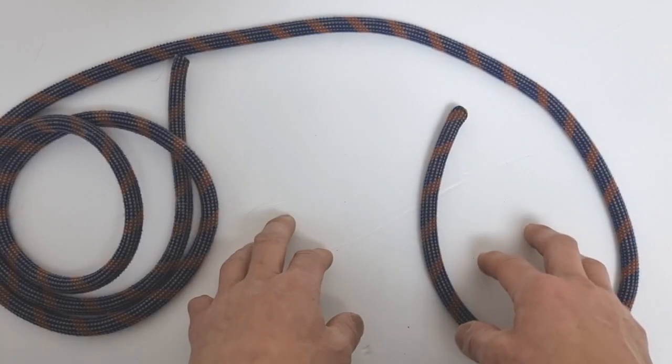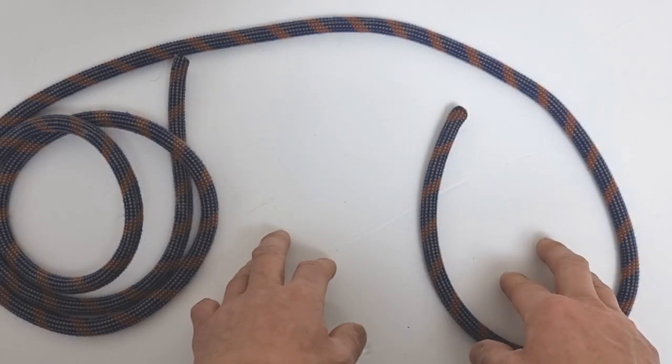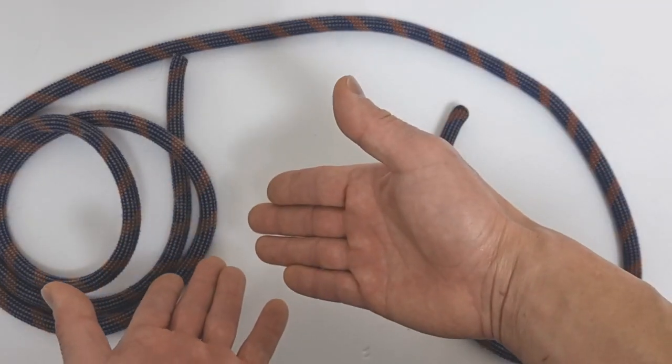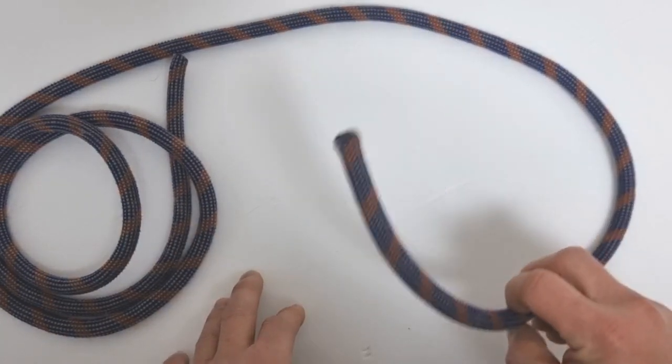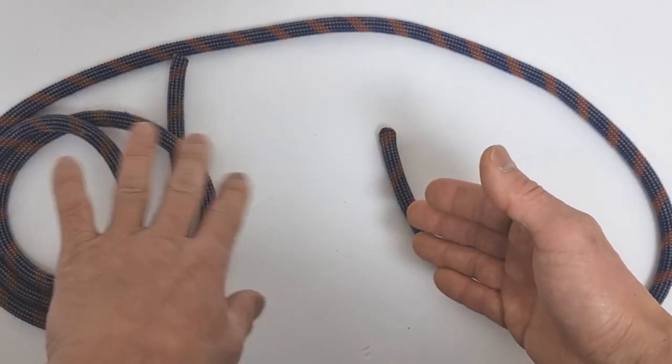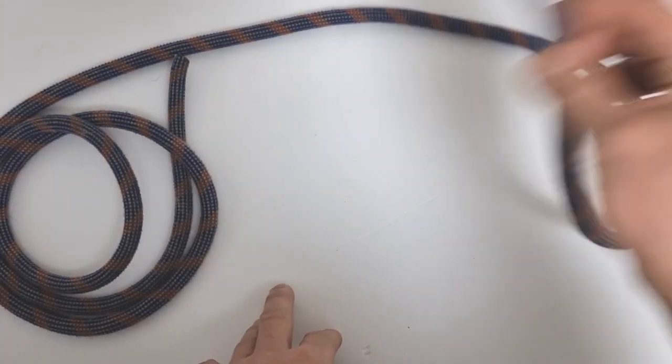Hello happy campers, welcome to the Camp Happy Show. Today I'm going to show you how to tie the barrel knot. This is our standing end and this is our working end. Remember, the standing end is where the rest of the rope is, and the working end is the part of the rope that we will move around.